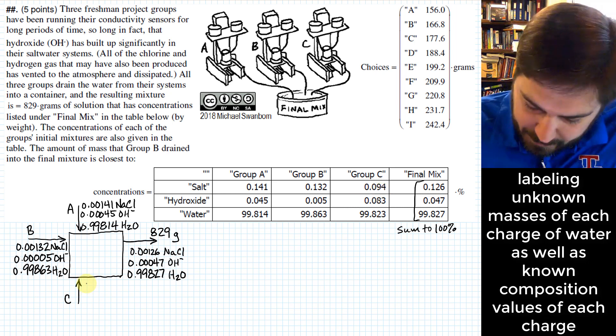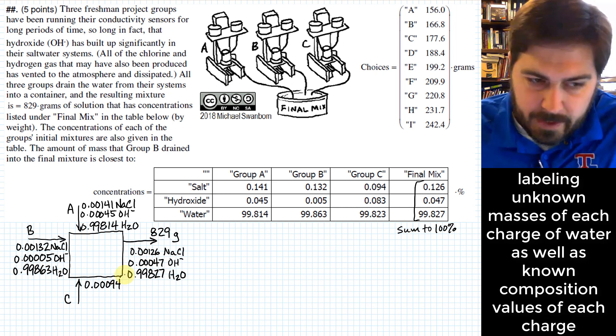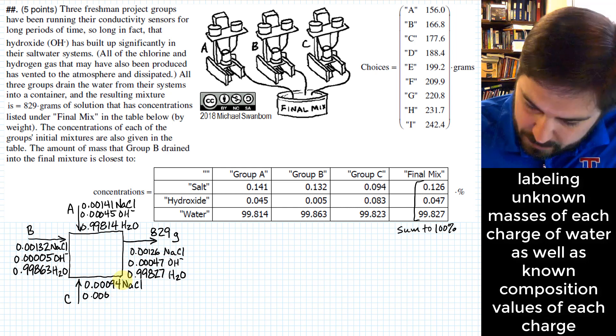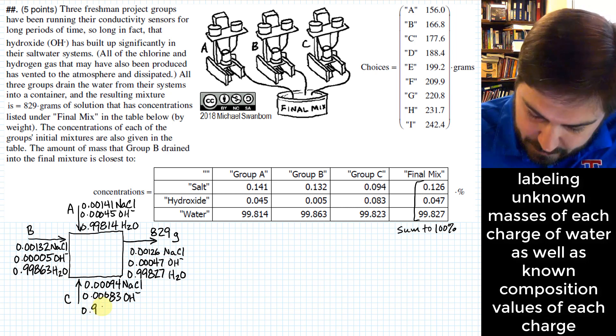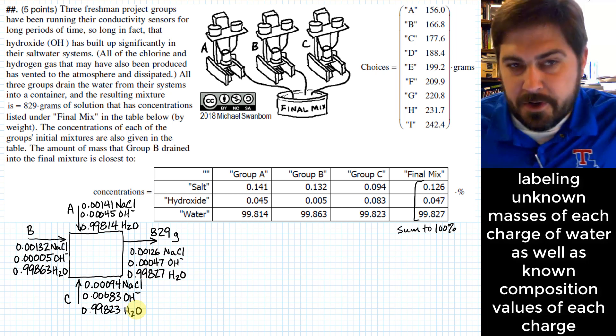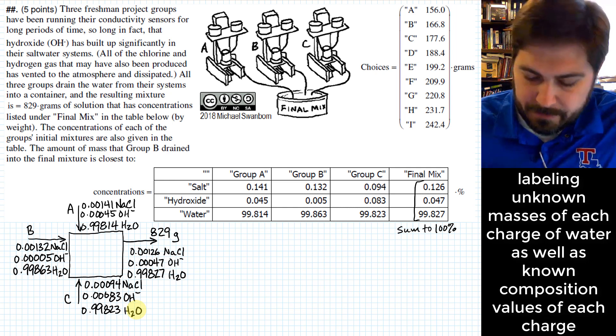Now we have group C, we have 0.00094, and that's salt. And we have 0.00083 hydroxide, and then I have 0.99823, and that would be water. So that's basically our process, is we're going to take those three flows and mix them.